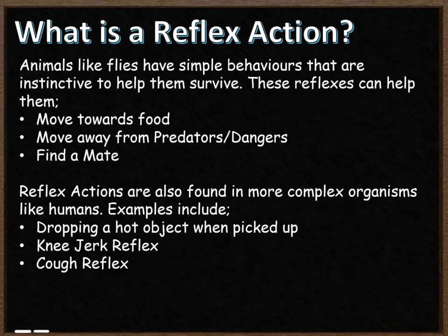So what is a reflex action? Animals like flies have simple behaviours that are instinctive, and they're there to help them survive. These reflexes can help them do a range of things, including moving towards food, moving away from predators or dangers, and finding a mate.